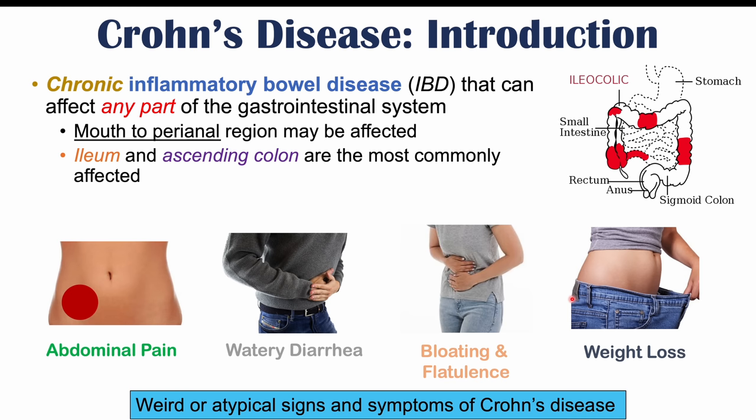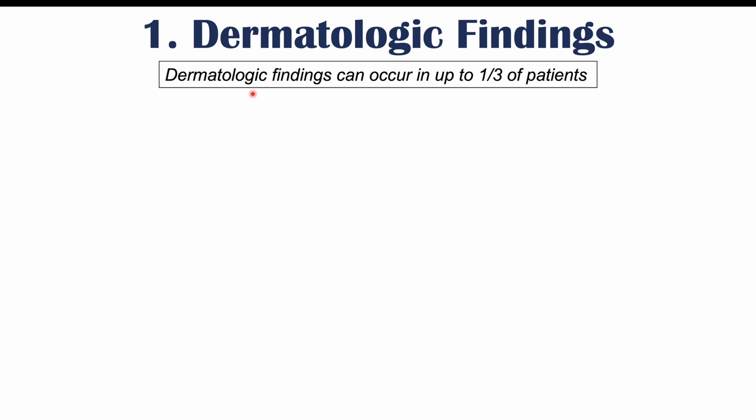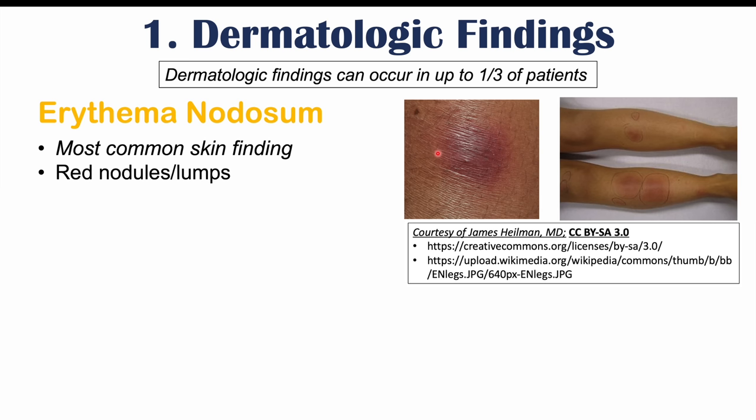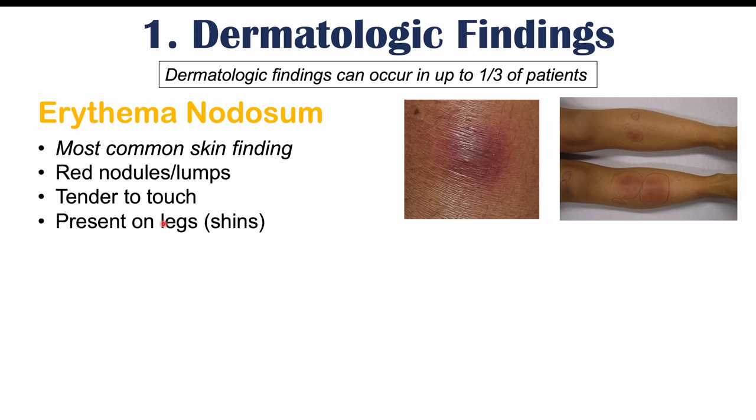The first category is dermatologic, or skin, findings. These can occur in up to a third of patients with Crohn's disease. One of the most common skin findings is erythema nodosum — red, tender nodules or lumps present on the legs or shins, caused by inflamed fat cells underneath the skin.